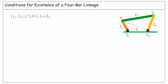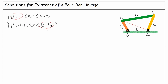Similarly, for the existence of triangle ABO4, the absolute value of L3 minus L4 must be less than or equal to O4A, which must be less than or equal to L3 plus L4. Since the absolute value of L1 minus L2 is less than O4A, and O4A is less than L3 plus L4, we can say the absolute value of L1 minus L2 is less than or equal to L3 plus L4.